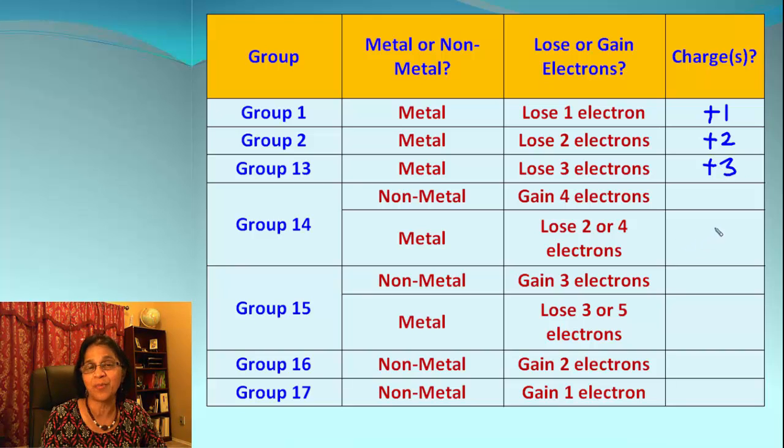Group 14 could be non-metal or metals depending upon which side of the zigzag line they are on. So if it's gaining four electrons it's going to be negative four. If it loses, it can lose two or it can also lose four, so based upon that it'll be positive two or positive four.